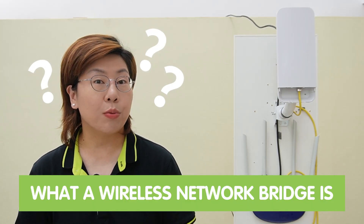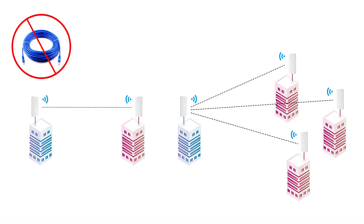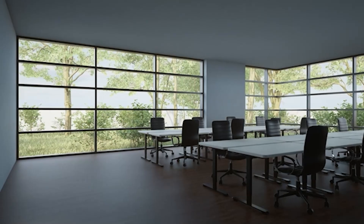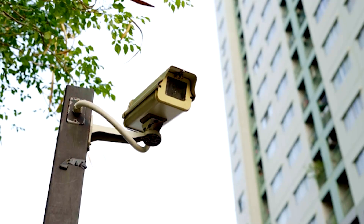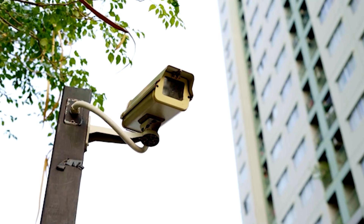Now first, let's make sure everyone understands what a wireless network bridge is. Essentially, it is a device that connects two or more network segments over a wireless connection. This allows for data to be transmitted wirelessly between different locations without the need for extensive cabling. They are incredibly useful for extending your network to remote buildings, outdoor areas, or across obstacles where cabling isn't feasible, and can be used for everything from providing internet access to a remote office to connecting security cameras on a large property.